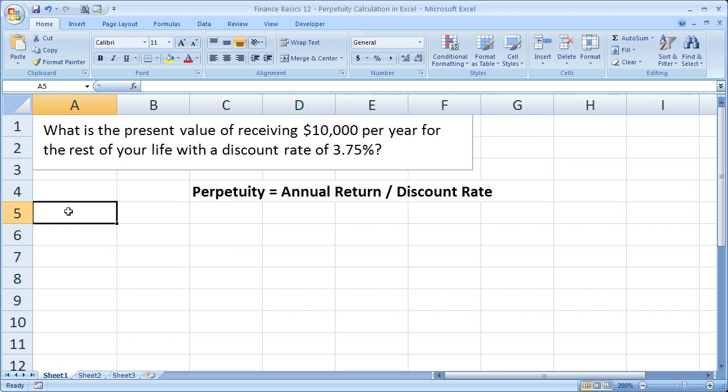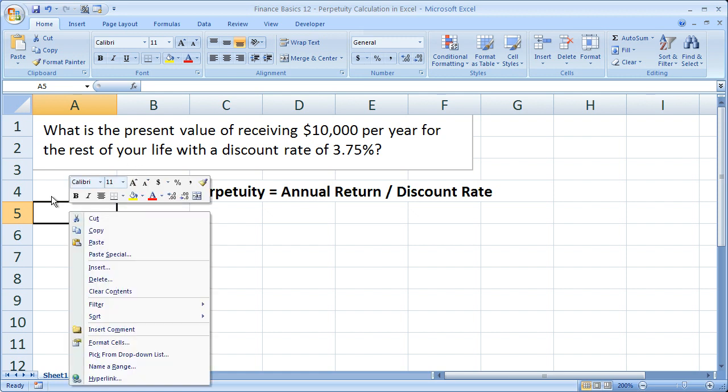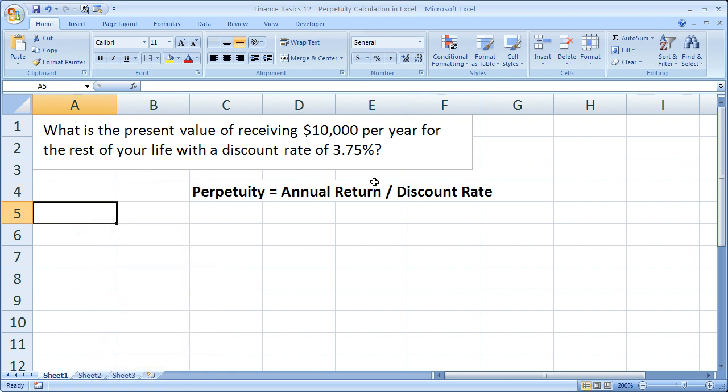So anyway, the basic perpetuity formula is right here: Annual return divided by discount rate. The discount rate simply basically could just be the interest rate. So we only have two numbers up here, so it makes it pretty easy. $10,000 divided by 0.0375.